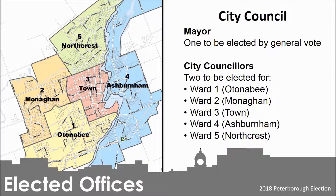The mayor and ten councillors are all elected for a four-year term. The five wards are: Ward 1, Otonabee; Ward 2, Monaghan; Ward 3, Town; Ward 4, Ashburnham; and Ward 5, Northcrest.